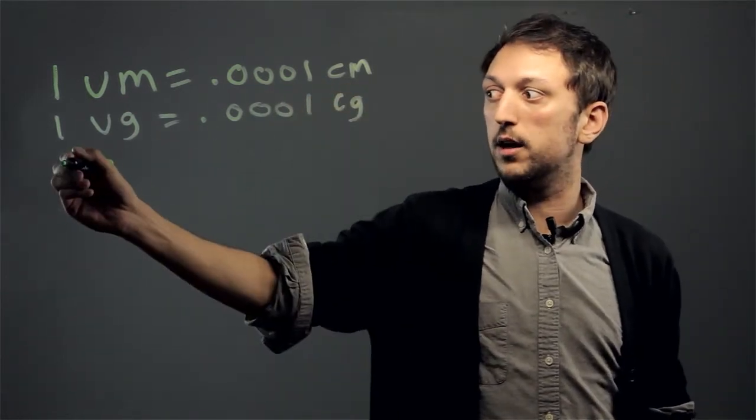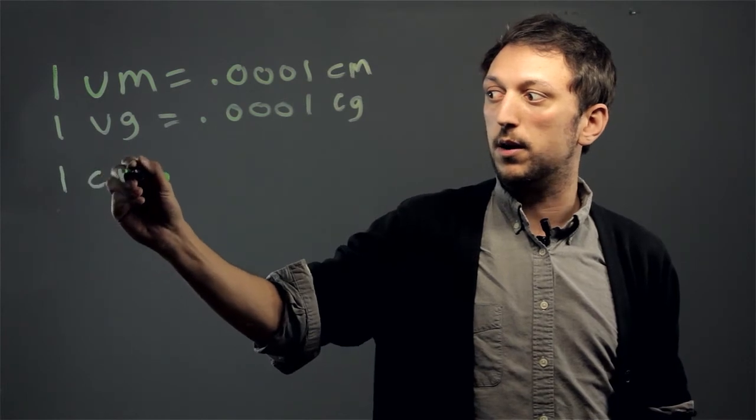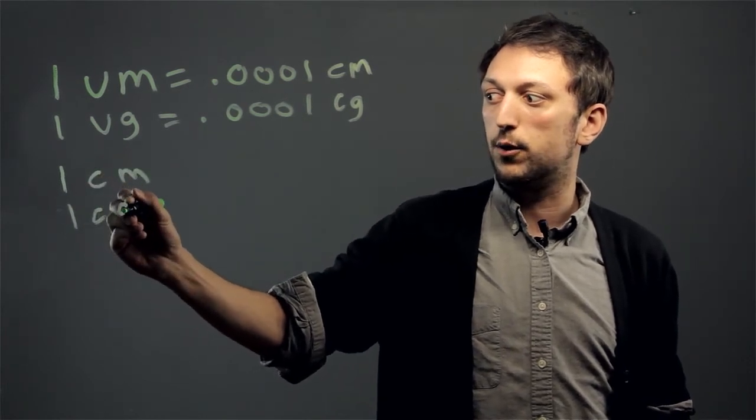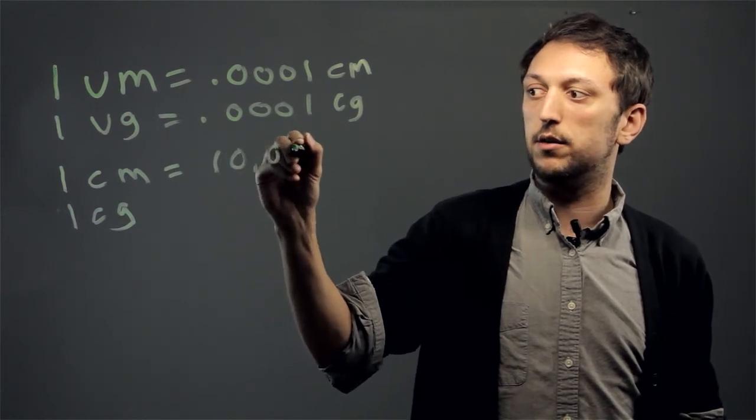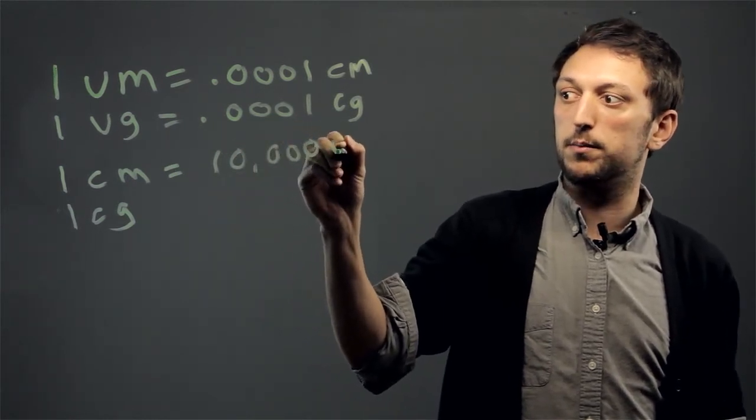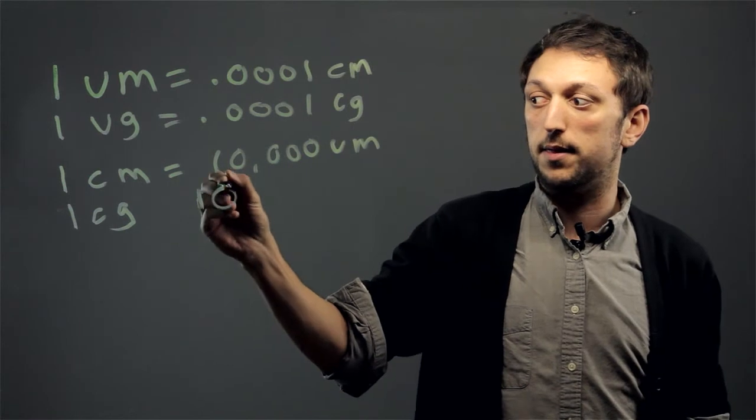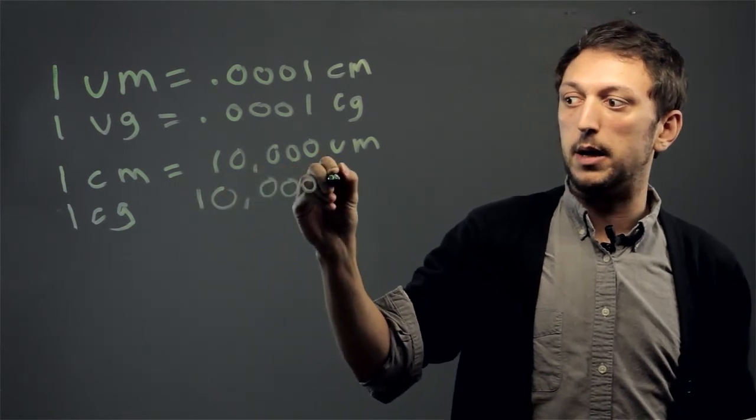If you want to convert the other way, one centimeter or one centigram equals ten thousand micrometers or ten thousand micrograms.